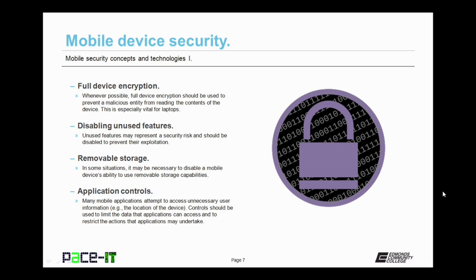This is something that should be covered in an organization's BYOD policies. Application controls are another concept that should be grasped. Many mobile applications attempt to access unnecessary user information — for example, they may want to use the location of the device when they start up. Controls should be used to limit the data that applications can access and to restrict actions that applications may undertake with the data that they do have access to.